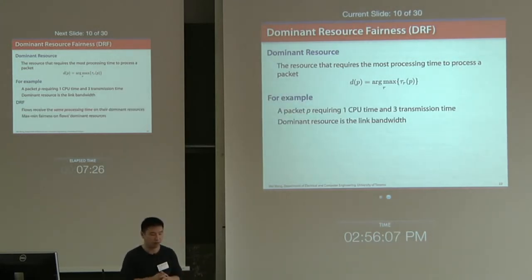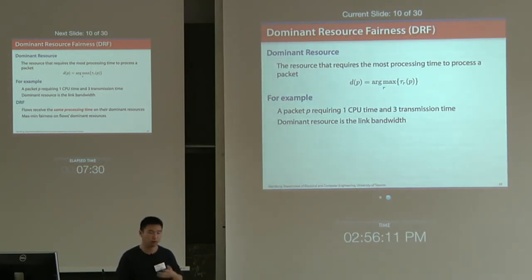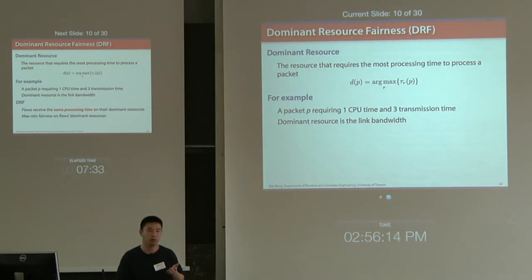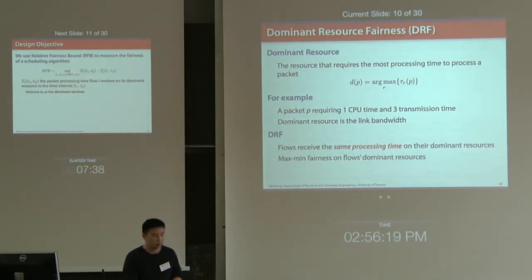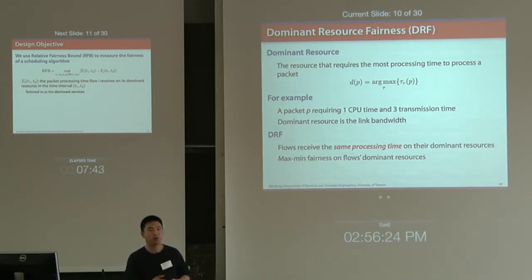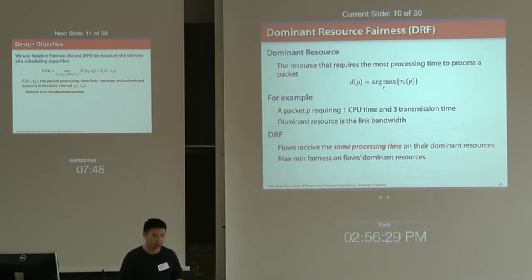For example, if you have a packet P that requires one time unit for CPU processing and three time units for link transmission, then the dominant resource is link bandwidth. DRF simply allows each flow to receive roughly the same processing time on its dominant resource. You can view it as max-min fairness applied to flows' dominant resources.